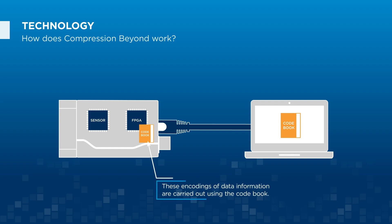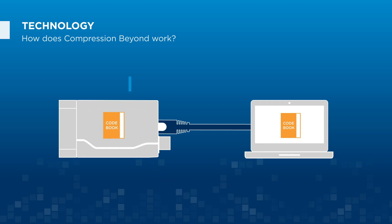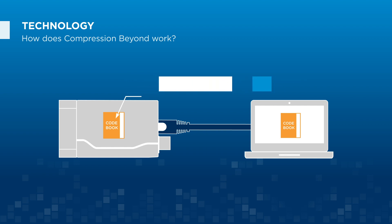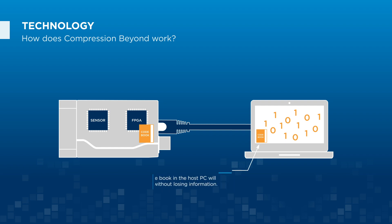These encodings of the data information are carried out using the codebook. The Compression Beyond feature is based on a codebook developed by Basler, which is unique in the market. The principle of entropy coding enables lossless compression of image data. The codebook in the host PC will decode data without losing information.